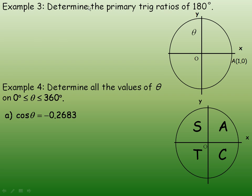Flipping over to the third page, we're asked to determine the primary trig ratio of 180 degrees. 180 degrees would be this rotation all the way around to here. The triangle is infinitely small over here, it's difficult to see the triangle. Remember that this would actually be the point over here, negative 1, 0.